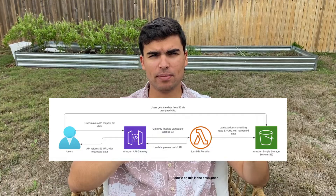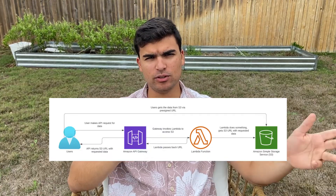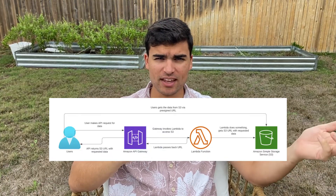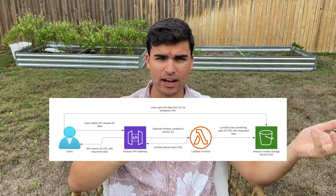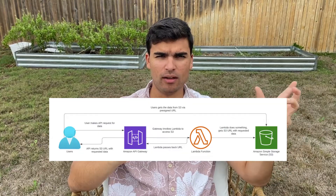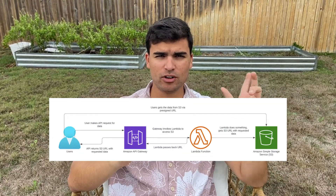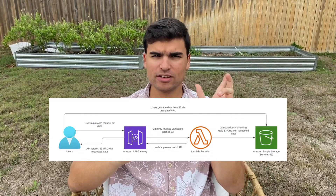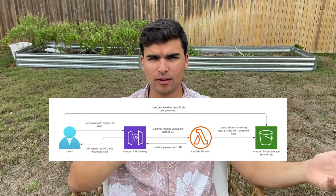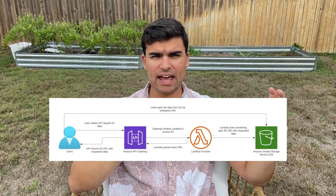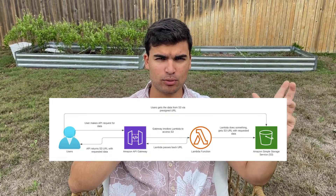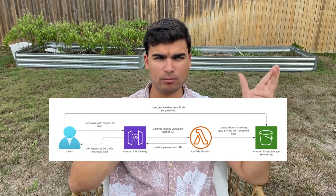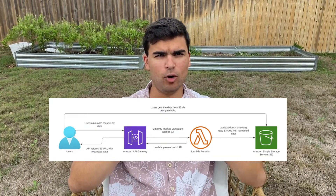Instead of directly passing data back to a user when they invoke your function, you can take that data, put it into an S3 bucket, and create a URL. You can then return that URL back to your consumers instead of directly returning the data. The user can then access that data in your S3 bucket via the pre-signed URL, and you now have no payload limitations due to S3.